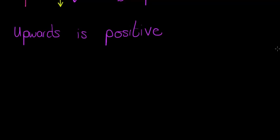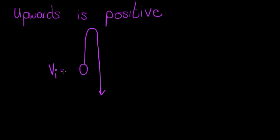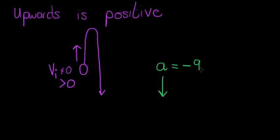Here we have an object that is projected upwards and then starts going downwards again. When we have an object that goes up, it means it must have an initial velocity that is not equal to zero — if it were zero it wouldn't have moved. That initial velocity will be greater than zero because it is projected upwards and we chose upwards to be positive.